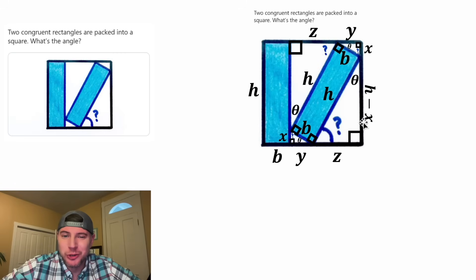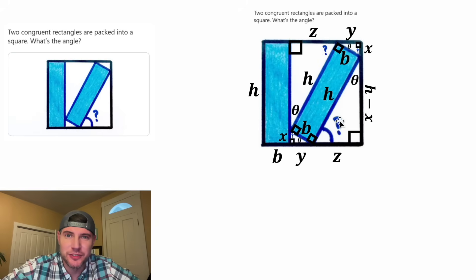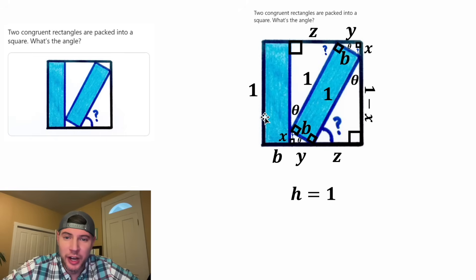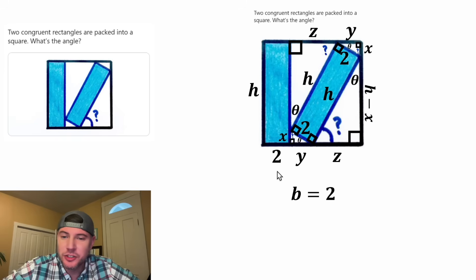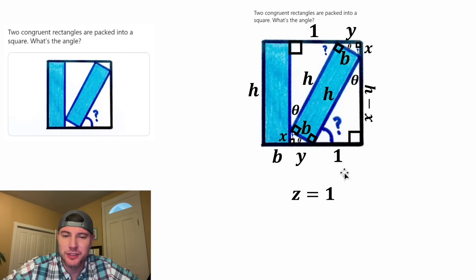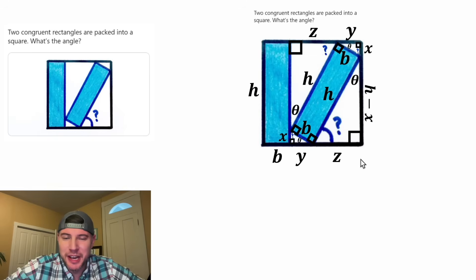Something else really cool: we have no scale factor here, so we have the freedom to assign a value to one of these variables. We could label the side length H equal to one, or we could make them all five. Or we could make all the Bs one, or make the Bs two. Or we could do the Xs as one, the Ys as one, or the Zs as one. I don't know which of those are gonna be best, so let's wait till later. For now, let's just leave everything as variables.